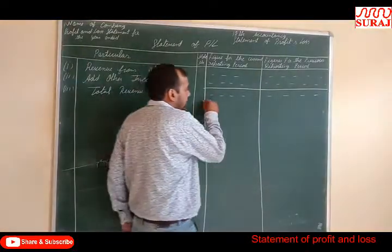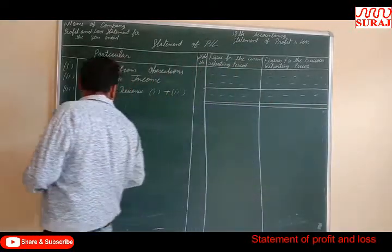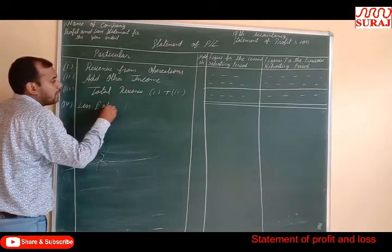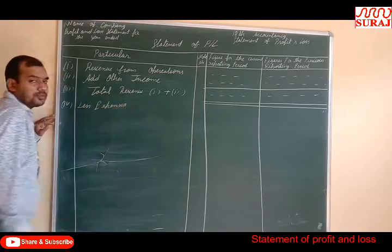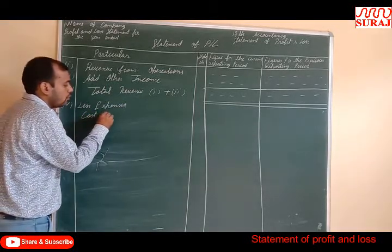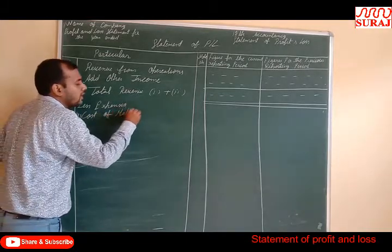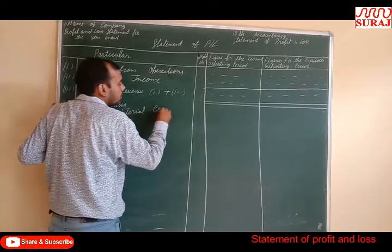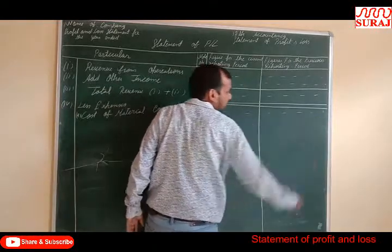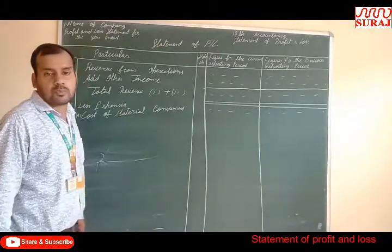Number 4: Less Expenses. Expenses are divided into different categories. The first category is Cost of Material Consumption. For a production company, any raw material and other things that are purchased are included in the Cost of Material Consumed.